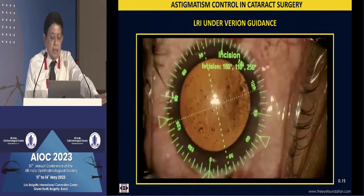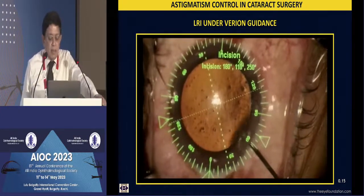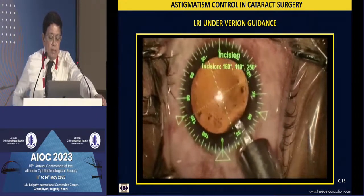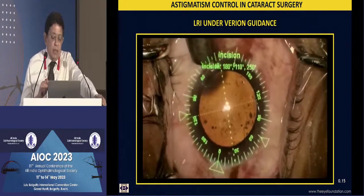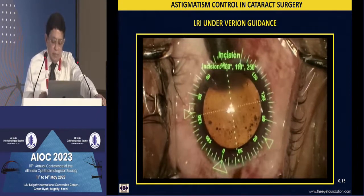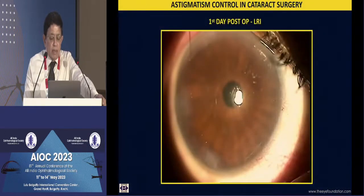I had given up doing limbal relaxing incisions for almost a decade, but once I had a digital imaging system — for the last 10 years or so — I started doing them again. The reason is greater accuracy: the exact arc length and position of the incision are better determined. Still, this is for small amounts of astigmatism where you can do a good cataract surgery and add a limbal relaxing incision at the end.